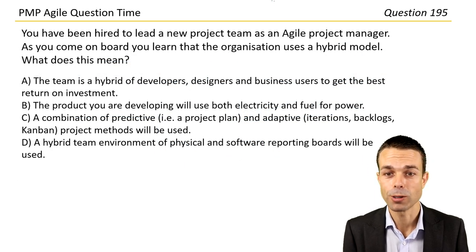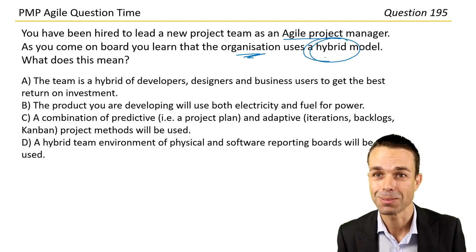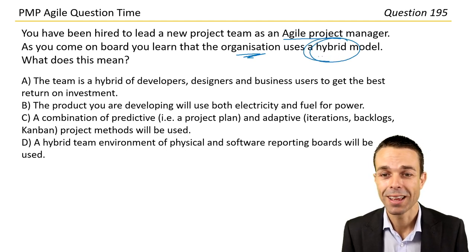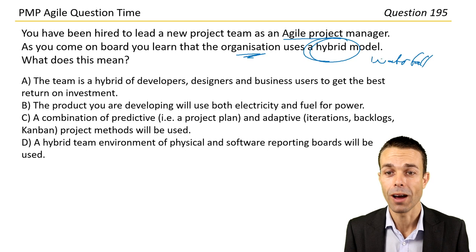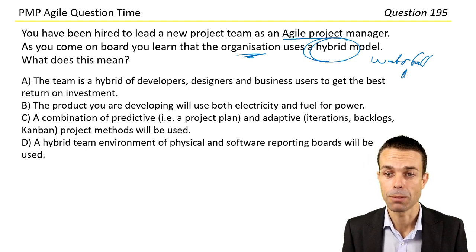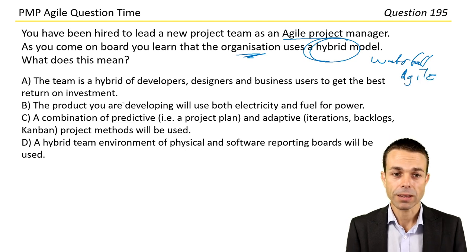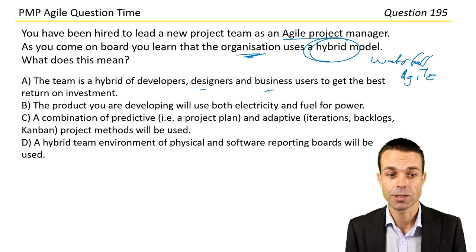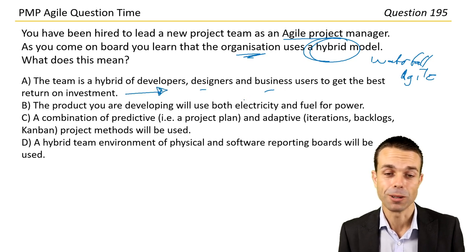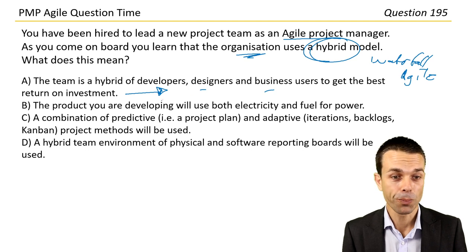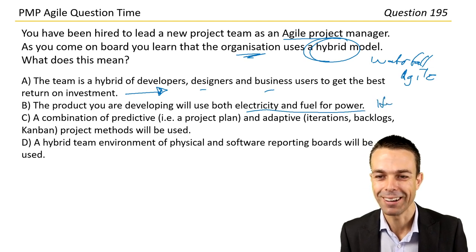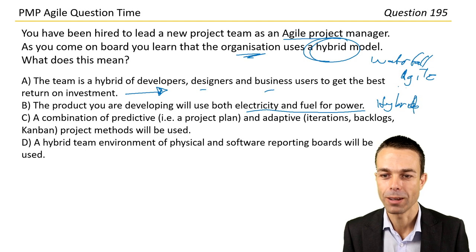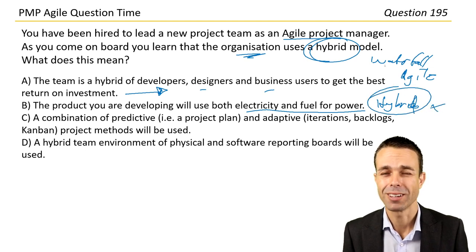You've been hired to lead a new project team as an Agile project manager and learn the organization uses a hybrid model. What does this mean? You'll see this on your PMP exam as well — a hybrid approach is part waterfall and part Agile or other methods like incremental or iterative. Is the team a hybrid of developers, designers, and business users? No, that's not the idea behind a hybrid model. Will the product use both electricity and fuel for power, like a hybrid car? Not that one.